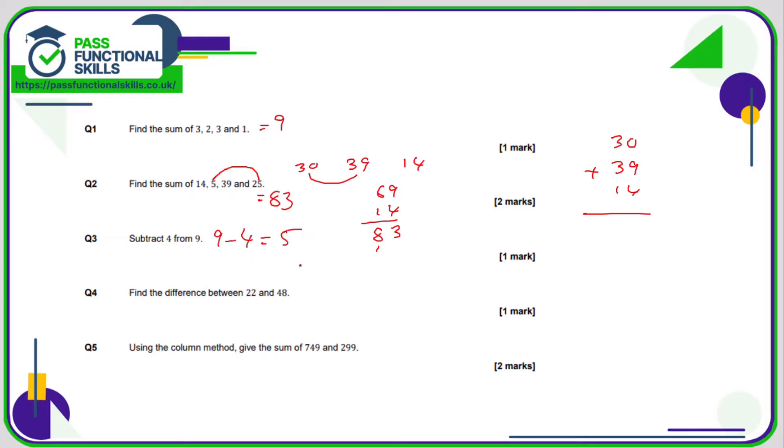Find the difference between 22 and 48. Well, that is subtraction, so I'm going to subtract the smaller number from the bigger number. So 48 take away 22. Eight minus two is six, four minus two is two, so the answer is 26. Number five says the sum of, so we're adding using the column method.